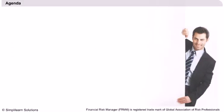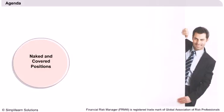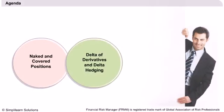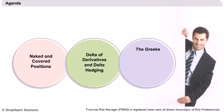Agenda. The agenda of the discussion will be to learn about the properties of the Greeks that affect option price. We will begin with the concept of delta hedging and why it is risky to have a naked position. The delta of derivatives will be discussed. We will then learn about the other Greeks such as theta, gamma, vega and rho. The properties of these factors will be discussed, and then we will see the mathematical relationship between the important Greek letters. Finally, we will end the session with a brief discussion about practical approaches in hedging and portfolio insurance.